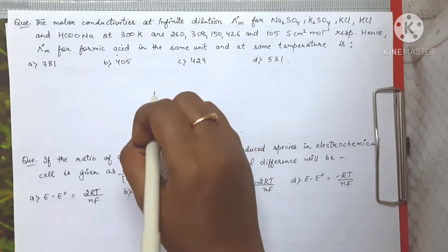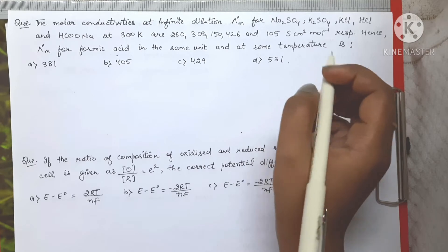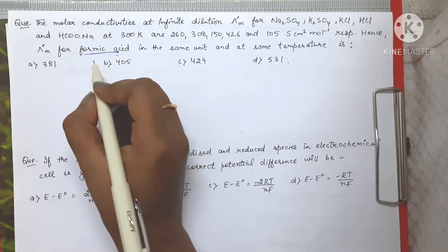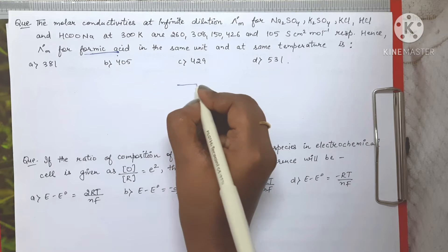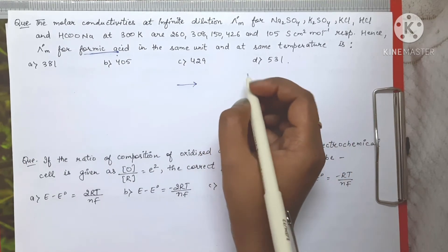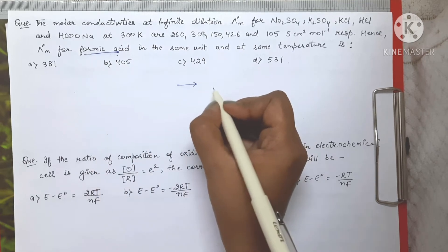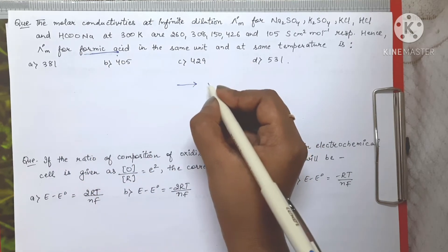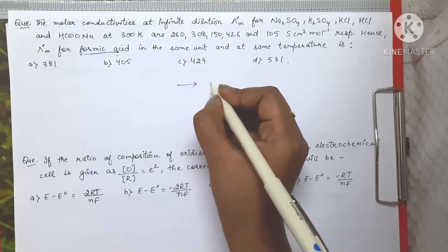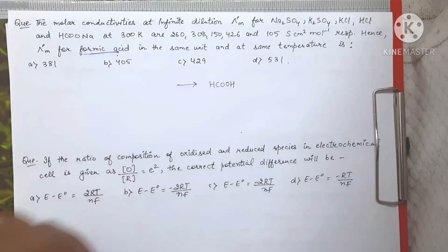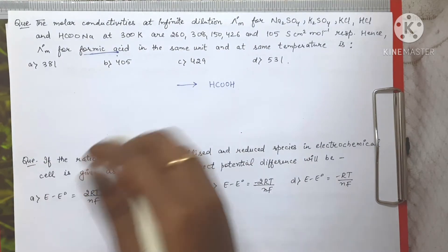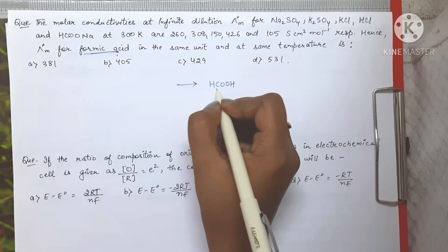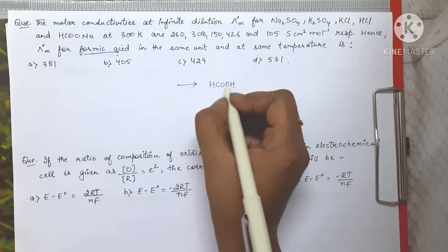I am going to tell you the easiest way to do these types of questions. We have to find the λ°m value for formic acid, so I just develop one equation where I write down whatever we have to find on the right hand side. Formic acid is HCOOH, so on the right hand side we write HCOOH. Now we look for the anion and cation parts — HCOO⁻ and H⁺.